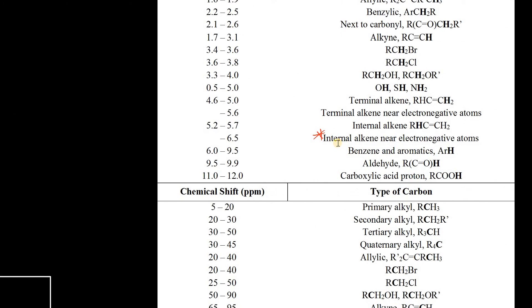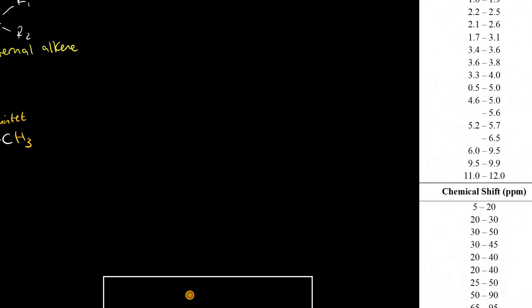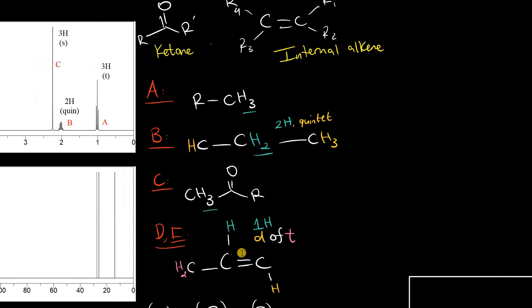That's indicative of an internal alkene near electronegative atoms. Because one of our signals is close to 7, the alkene is probably as close as possible to the ketone, forming the conjugated product.